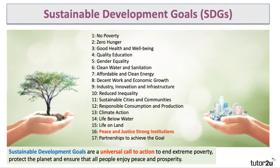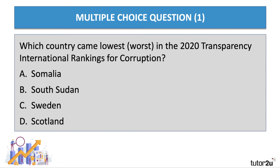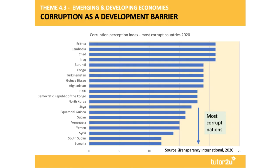Corruption is one of those topics you can easily bring into any discussion. Here's another quiz question: which country came lowest — aka worst — in the 2020 Transparency International Rankings for Corruption? Was it Somalia, South Sudan, Sweden, or Scotland? I'll give you a clue: the answer starts with an S. Well, in 2020 it was Somalia who came worst for corruption.